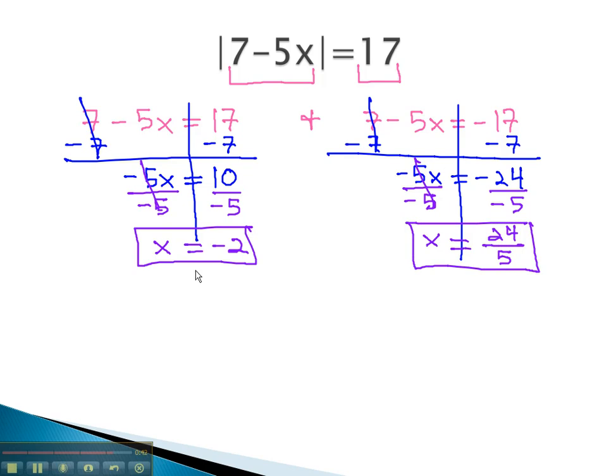If we were to plug the first solution into the problem, negative 2, we would have negative 5 times negative 2, which is positive 10, plus 7. The absolute value of 17 is 17. Similarly, if we plug the 24 fifths in for x, we would end up with negative 24. Plus 7 would be negative 17, and the absolute value would make it positive 17.